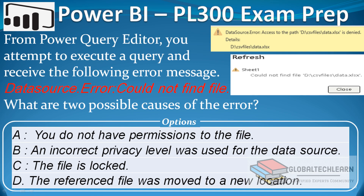Now let's look at the options. Option A: 'You do not have permission to the file' — this relates to the first error, 'access is denied,' so we will check this option. Option B: 'An incorrect privacy level was used for the data source' — this is related to defining the privacy level for the data but is not related to data access or the file path, so we can ignore this option.